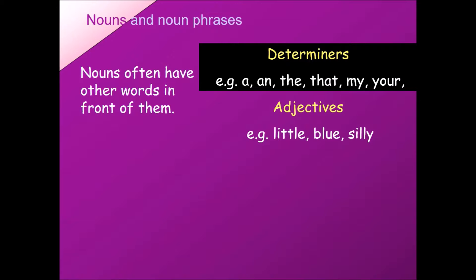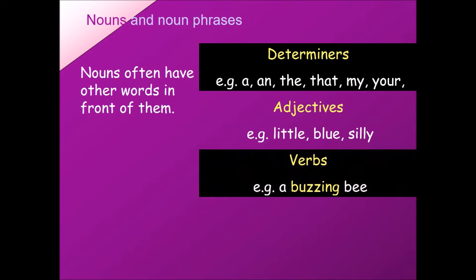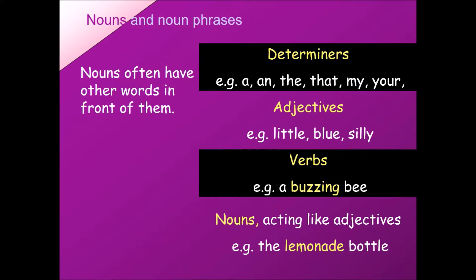We can also have adjectives in noun phrases — words like little, blue, silly — coming before or after the noun. We can also use verbs to expand our noun, such as 'a buzzing bee.' Nouns can act like adjectives too, so you can use 'the lemonade bottle' — a noun expanding another noun.